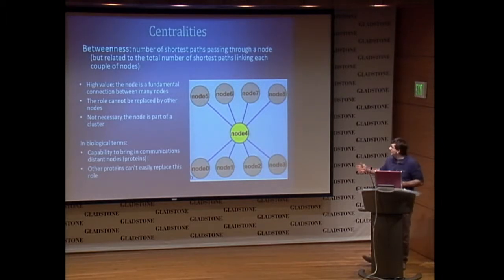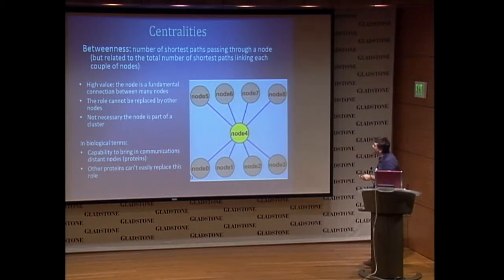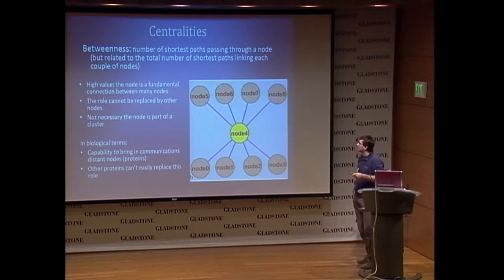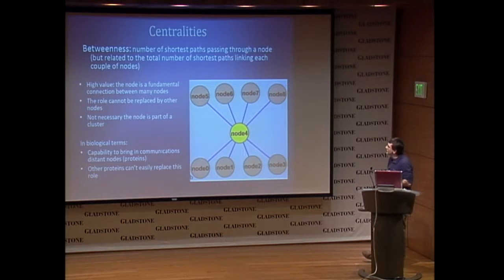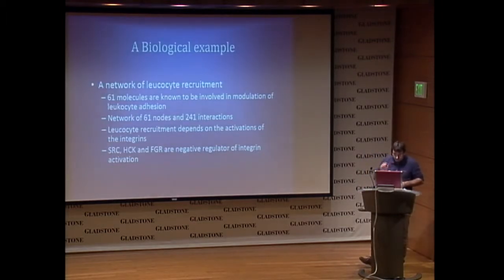Here is an example of a node with high betweenness because it connects the top and the bottom of the network. If a node has high betweenness, we can imagine that it is a communicating node — it brings into communication several other nodes in the network.